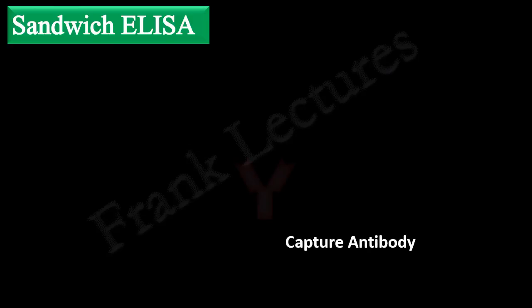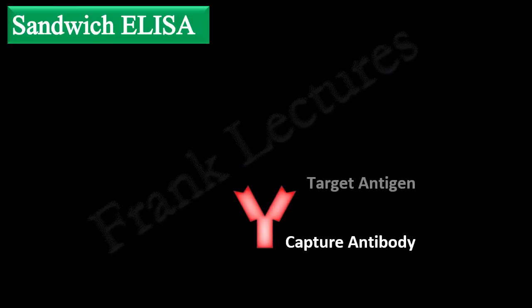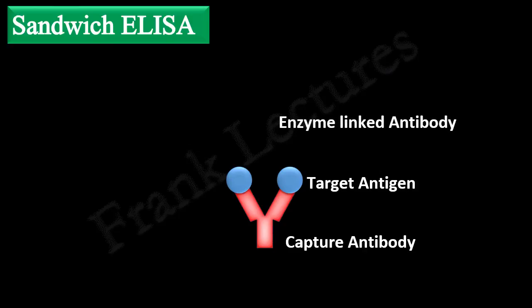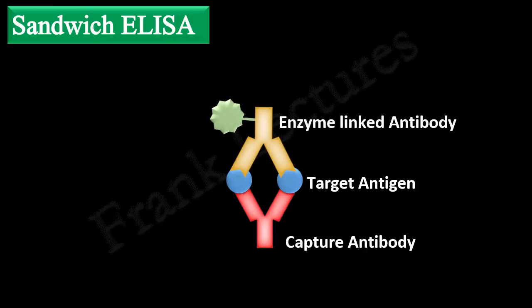Let's understand the details of sandwich ELISA. Sandwich ELISA requires three main components: a capture antibody, the target or test antigen, and an enzyme-linked antibody. Thus, in sandwich ELISA, an antigen is trapped between two antibodies.